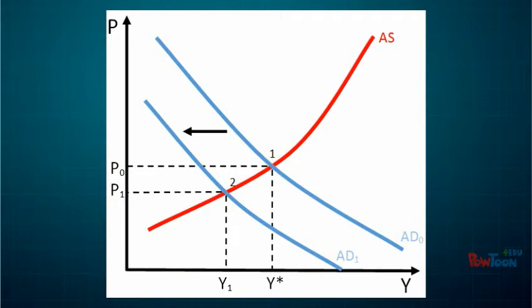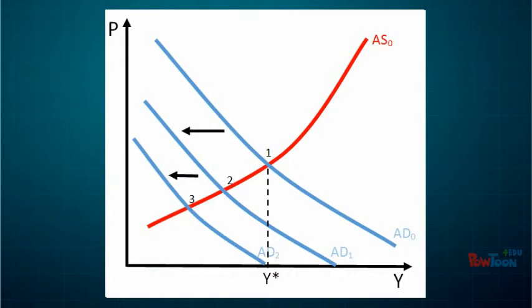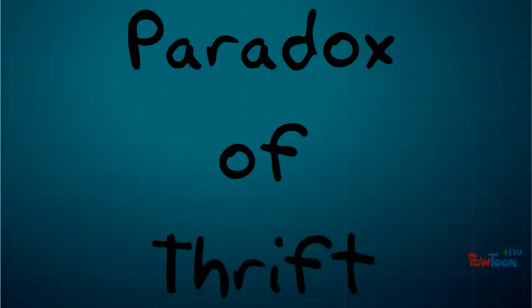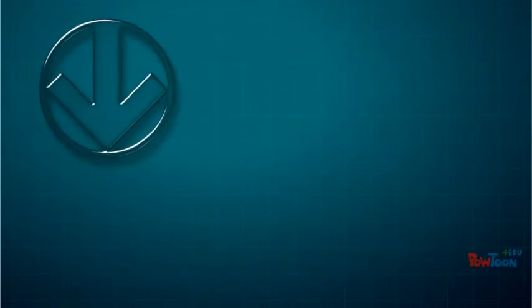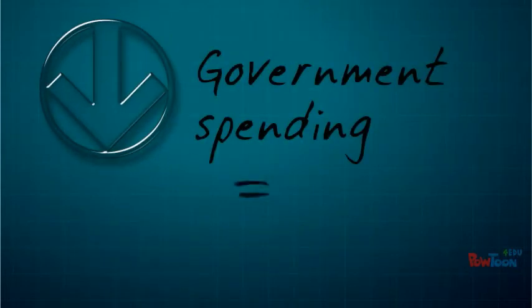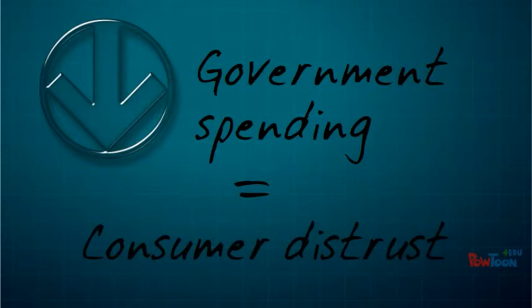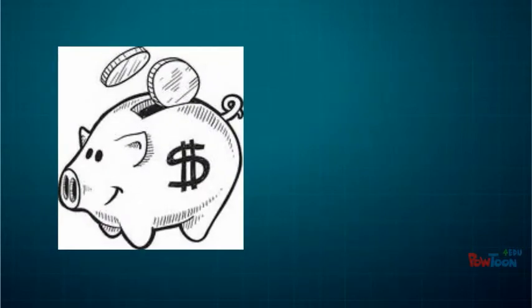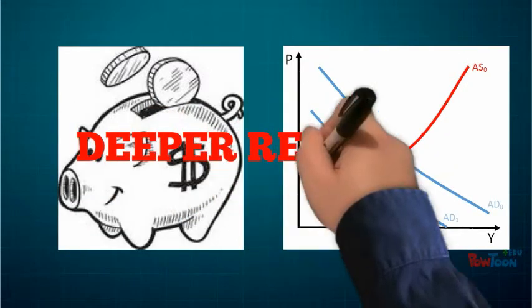If government spending decreases, it will push the AD curve further to the left. We also need to consider the paradox of thrift. If consumers have little faith in the state of the economy, which would be the result of the government decreasing its spending, they will save more. This decreases consumption and pushes the AD curve to the left and further into recession.